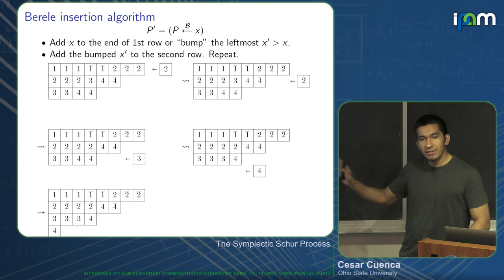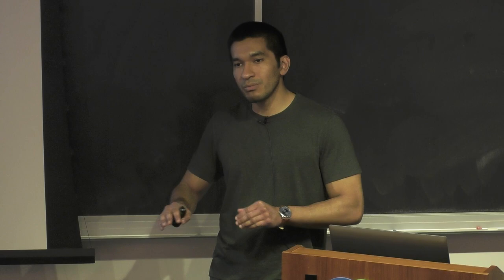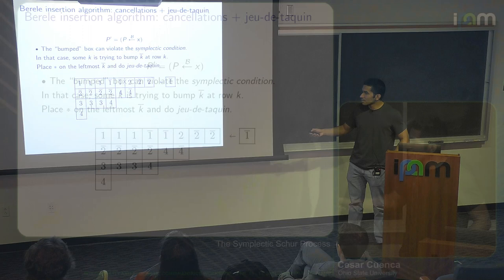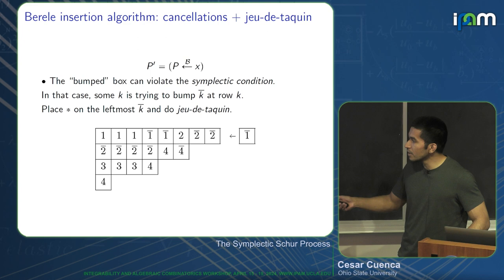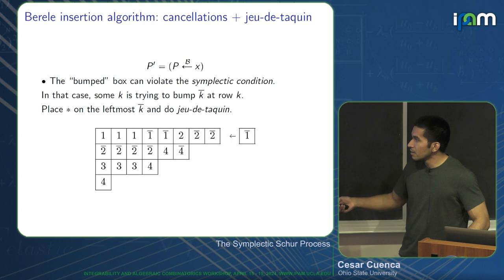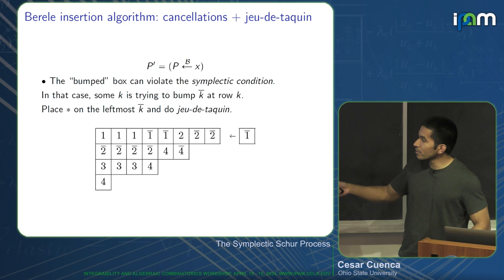However, there is a problem. The problem comes from the symplectic condition: entries in row k have to be at least k, and with this algorithm that's not guaranteed. There will be a violation if at some point k is trying to enter row k and there is already a k-bar there. In that case, the k and the k-bar cancel each other, and then we do a process called jeu de taquin.